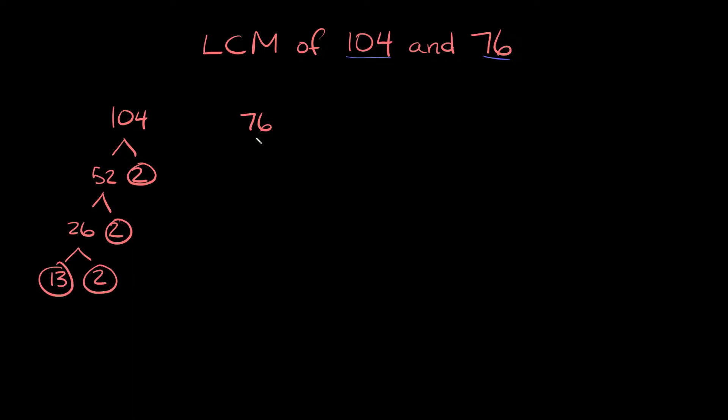And same thing with 76. This is an even number, so we can break it down into 2 times 38. This is prime. 38 we can break down into 2 times 19. And 2 and 19 are both prime. Nothing left to break down, so we're done. So that's the first step, just finding your prime factors.